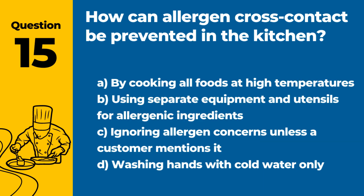Question 15. How can allergen cross-contact be prevented in the kitchen? Answer: B. Using separate equipment and utensils for allergenic ingredients. This helps in preventing cross-contact and ensuring the safety of customers with food allergies.